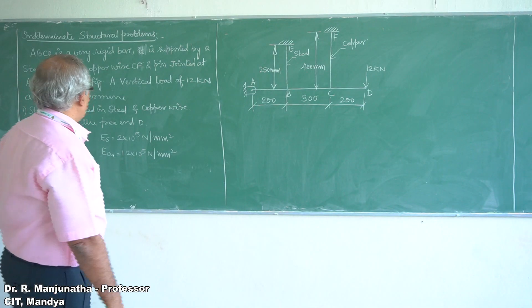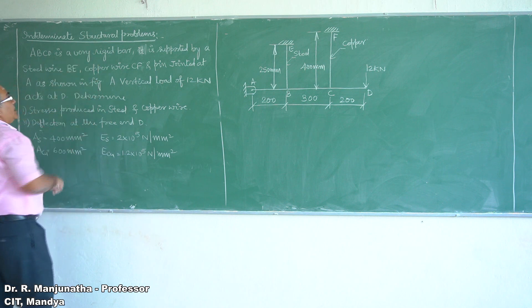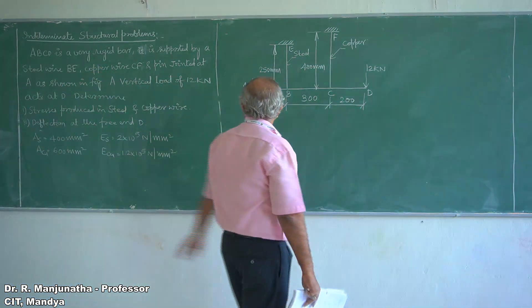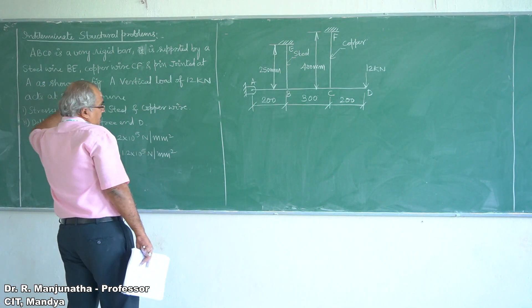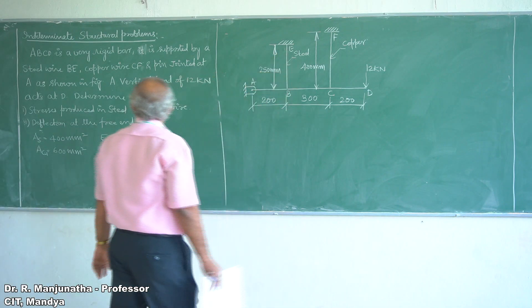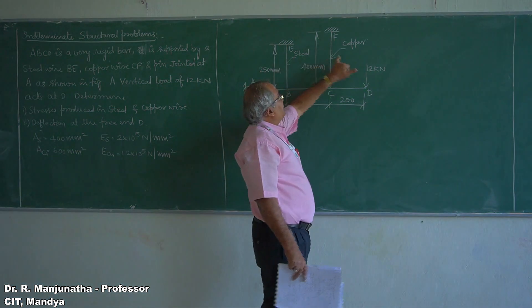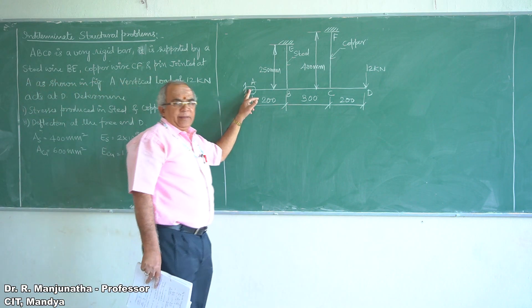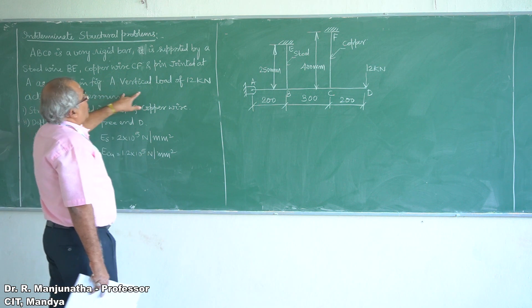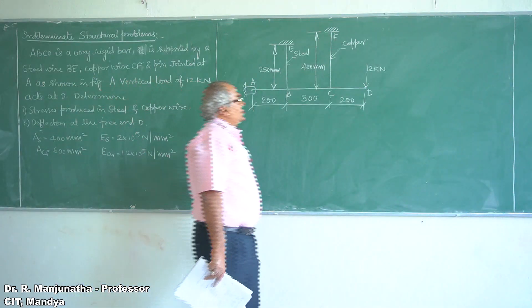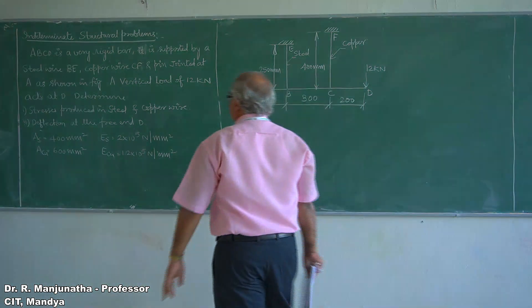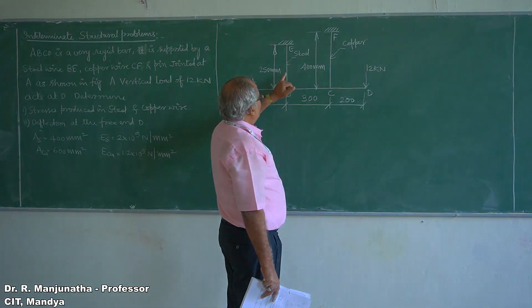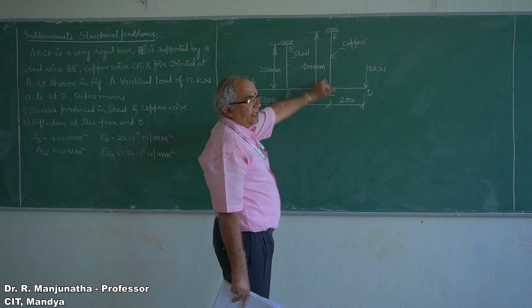We are going to take up the next topic which is on the interplanar structure problem. Here ABCD is a vertical, very rigid beam. It is supported by a steel wire and a copper wire, pin-jointed at point A. A vertical load of 12 kN acts at point D. We need to determine the stresses produced in the steel wire and also in the copper wire.